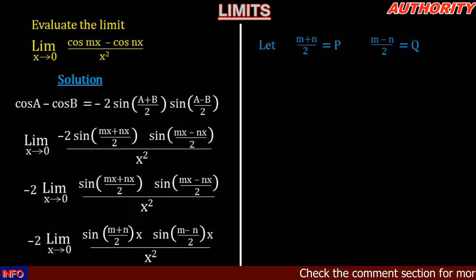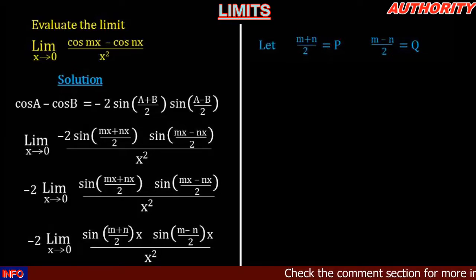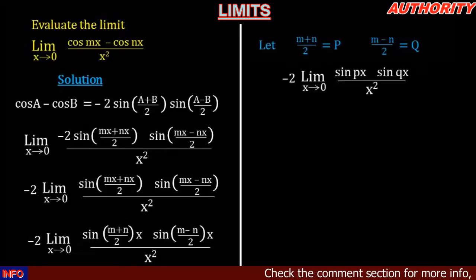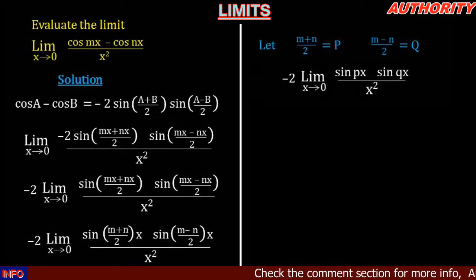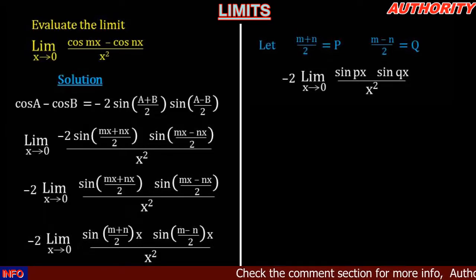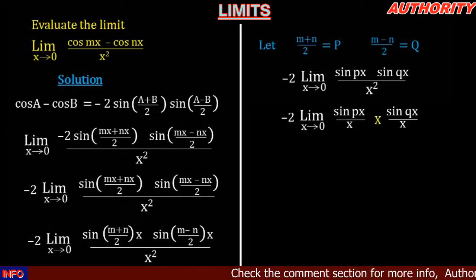And let m minus n all over two be called letter q. So replacing (m plus n)/2 with p and (m minus n)/2 with q respectively, we are going to have minus two times the limit as x approaches zero of sin(px) times sin(qx), all over x squared.